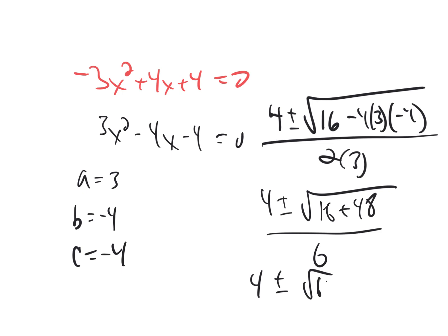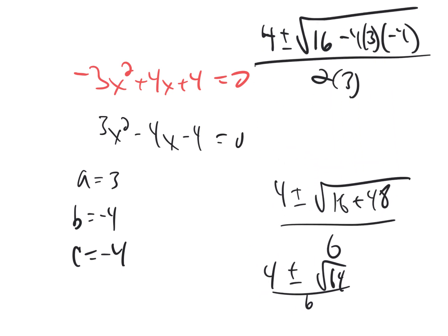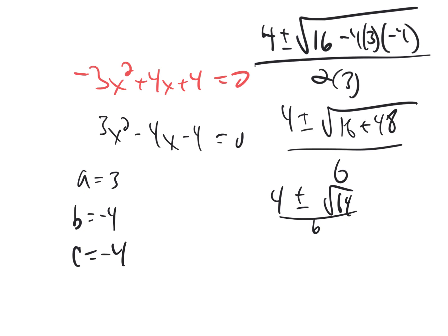That tells me you could have factored. So that's going to become, I probably should have been a little more patient and tried to figure that out. So 4 plus or minus 8 over 6. So that's telling me the answers are 4 plus 8 is 12 divided by 6 is 2. And 4 minus 8 is negative 4 over 6 is negative 2 thirds.